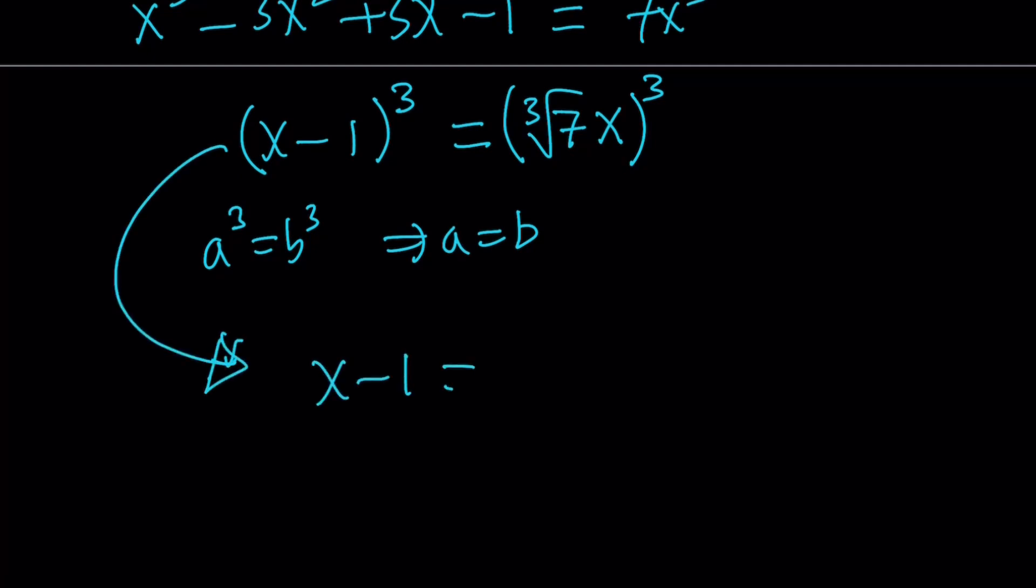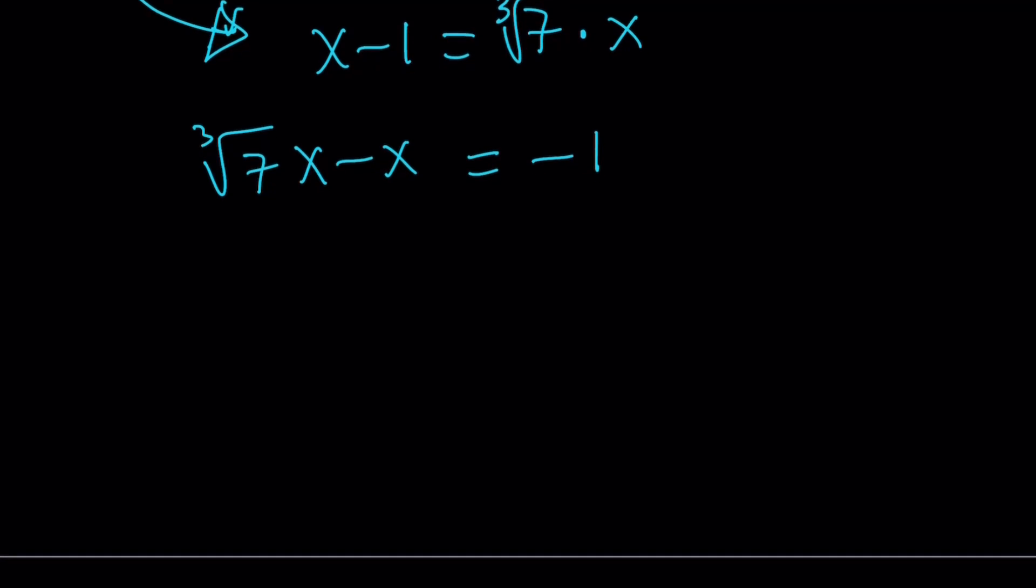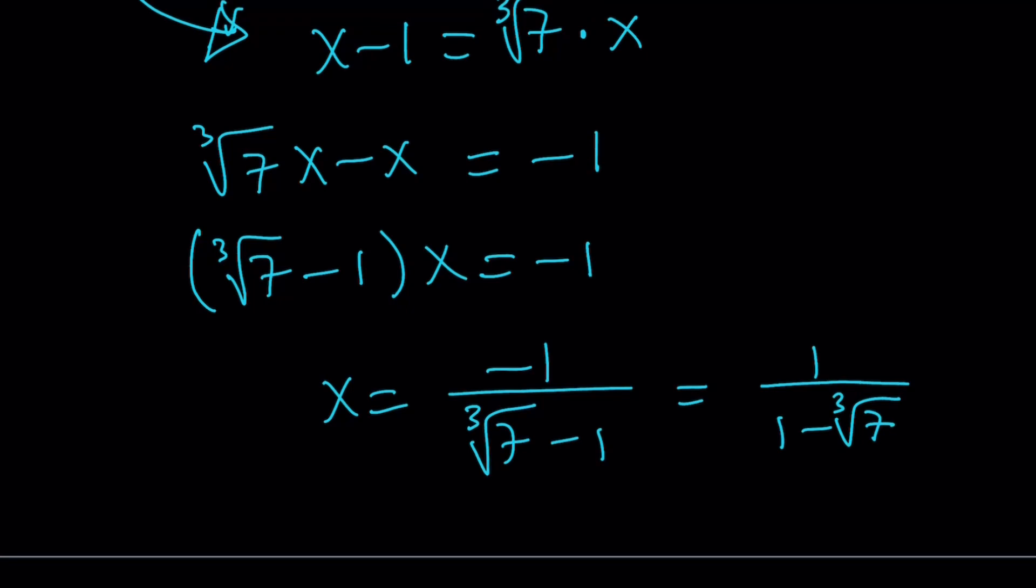x minus 1 equals the cube root of 7 times x. Hmm. That's interesting. Cube root of 7 is greater than 1. So, I'm going to subtract x from both sides to keep the coefficient of x positive. But, I'm going to have a negative number on the right-hand side. Anyways, that's okay. Now, we can go ahead and factor out x. Kind of like subtracting like terms. They don't like each other. One of them is a radical. But, anyways. We can write this as cube root of 7 minus 1 times x equals negative 1. And, from here, x equals negative 1 over cube root of 7 minus 1. Obviously, you could also write it as 1 over 1 minus cube root of 7, which some folks will probably do.